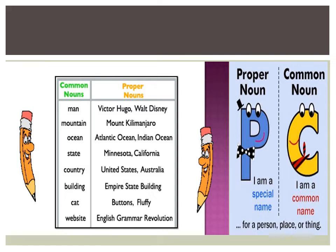So, let us try to differentiate between common noun and proper noun. As you can see here, a proper noun is a special name and a common noun is a common or general name. So, 'man' is a common noun whereas Victor Hugo and Walt Disney are proper nouns. 'Mountain' is a common noun whereas Mount Kilimanjaro is a proper noun. 'Ocean' is a common noun whereas Atlantic Ocean and Indian Ocean are proper nouns. 'State' is a common noun whereas Minnesota, California, and Chhattisgarh are all proper nouns.